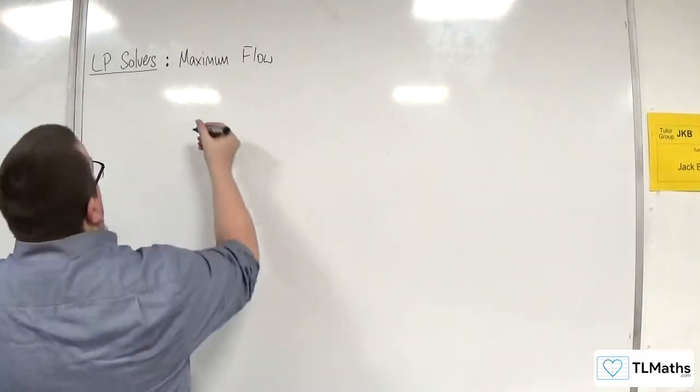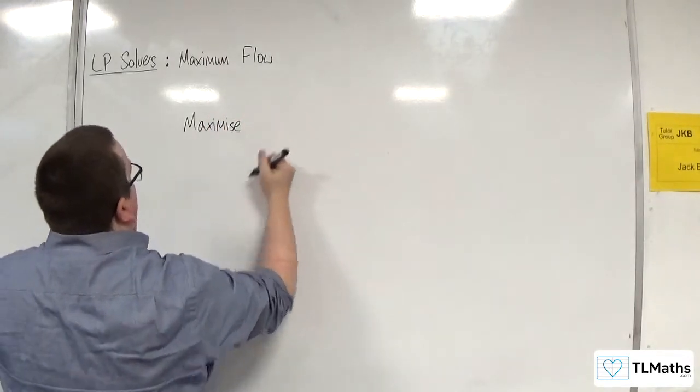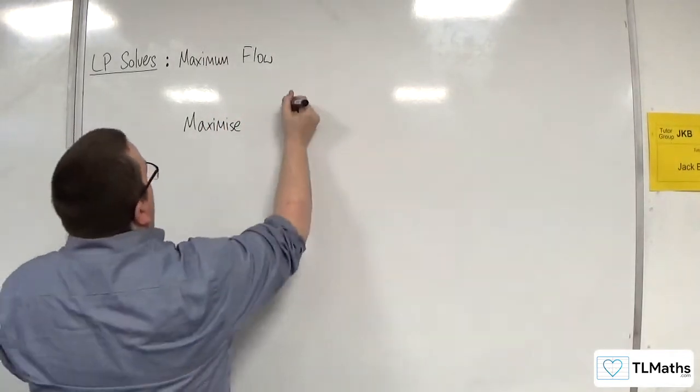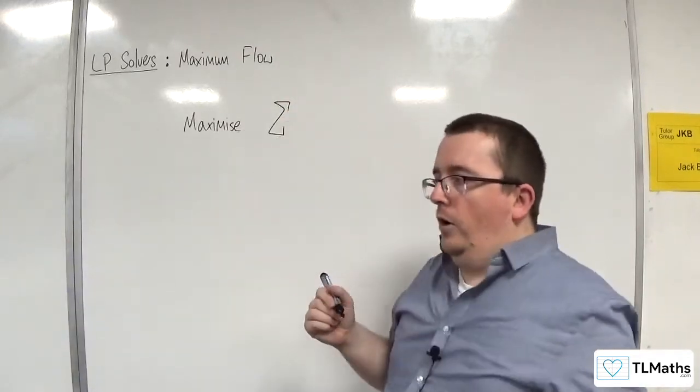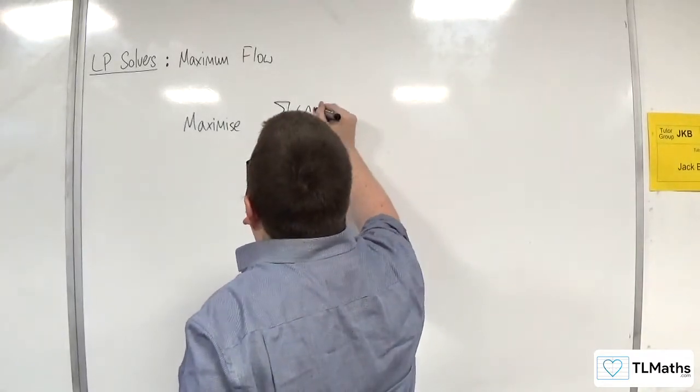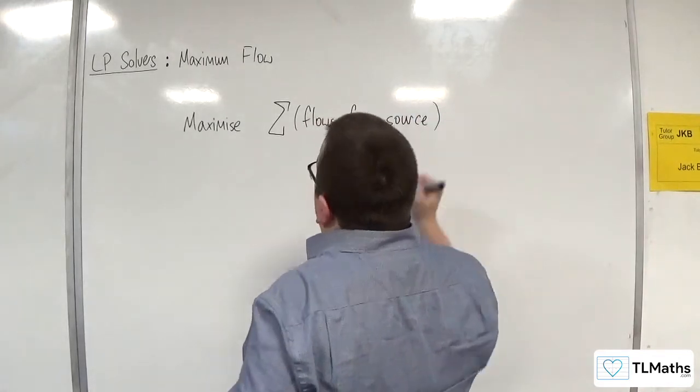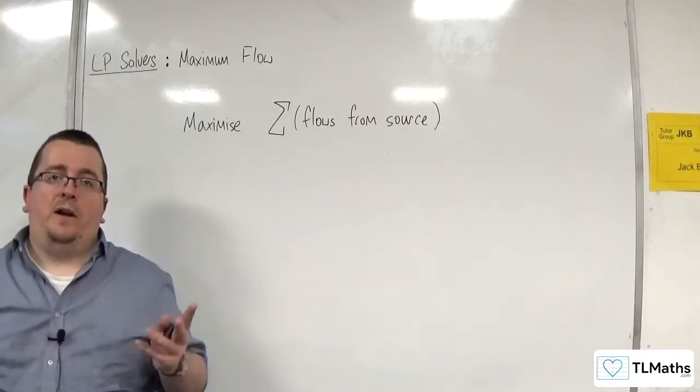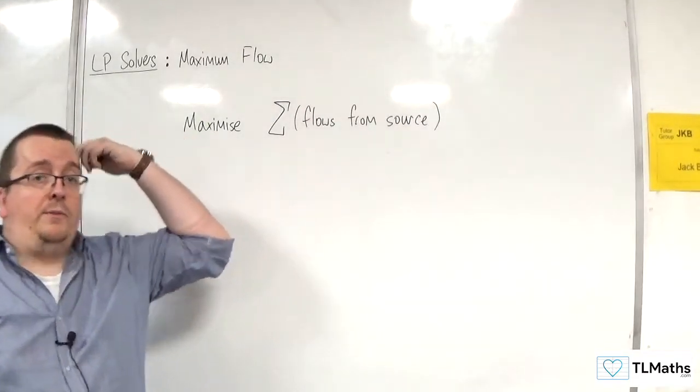So the objective function you need to maximize. Now you've got a choice here, but you're going to have the sum of all of the flows from the source, or you could have it as the sum of all the flows into the sink. Either or, it doesn't matter.